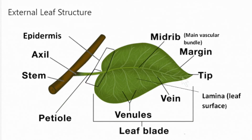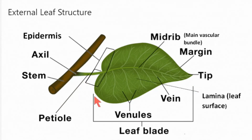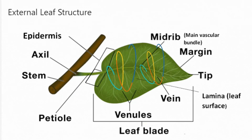This region of the leaf is called the margin. The converging point of the leaf is called the tip. The structure of the leaf altogether from the epidermis to the tip is called a leaf blade. The flat surface of the leaf blade is known as the lamina.